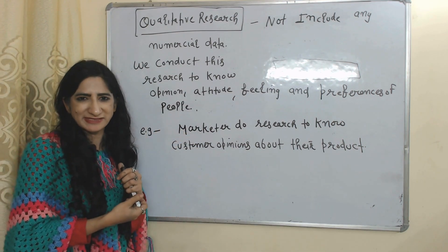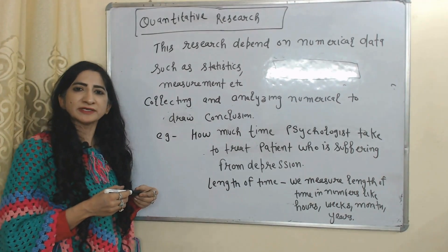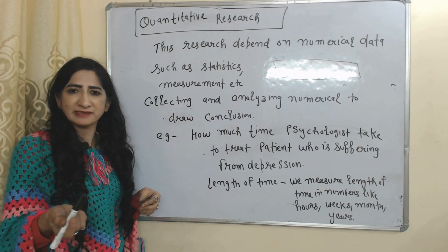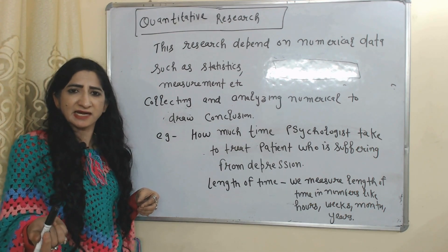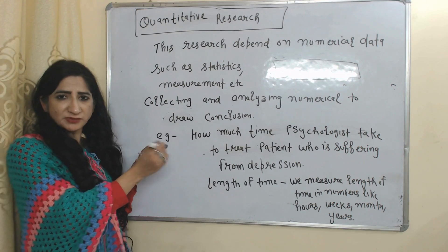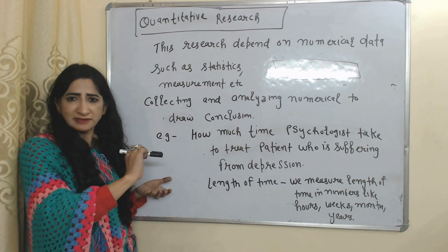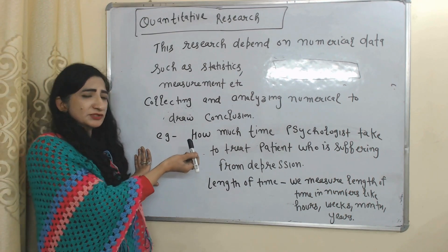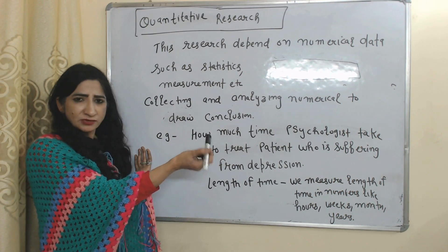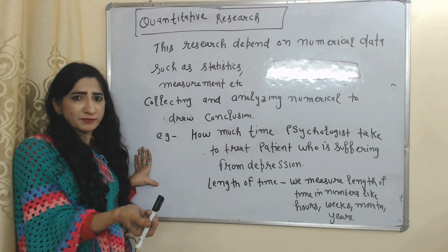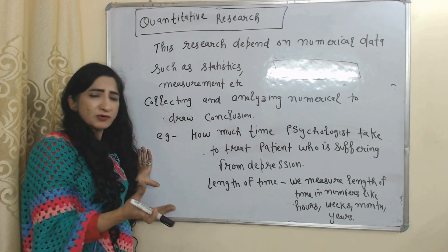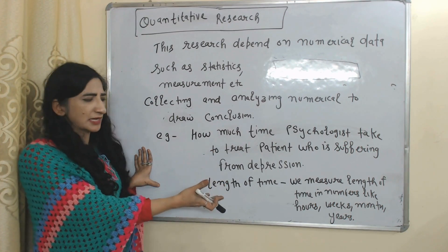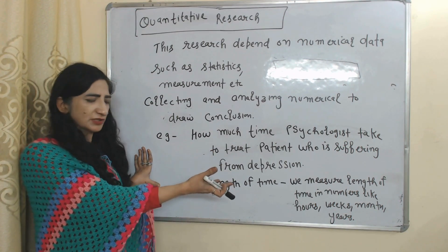Next is quantitative research. This type of research depends on numerical data, such as statistics and measurements. We collect and analyze numerical data in order to draw conclusions. For example, how much time a psychologist takes to treat a person suffering from depression — here we are talking about length of time, and we can measure it in numbers like hours, weeks, months, or years.